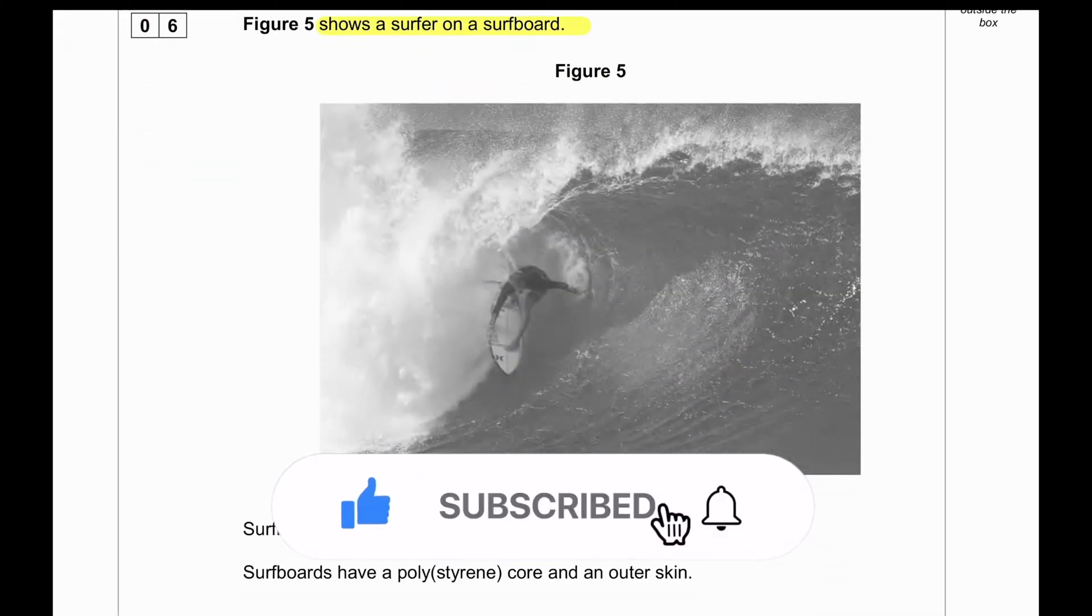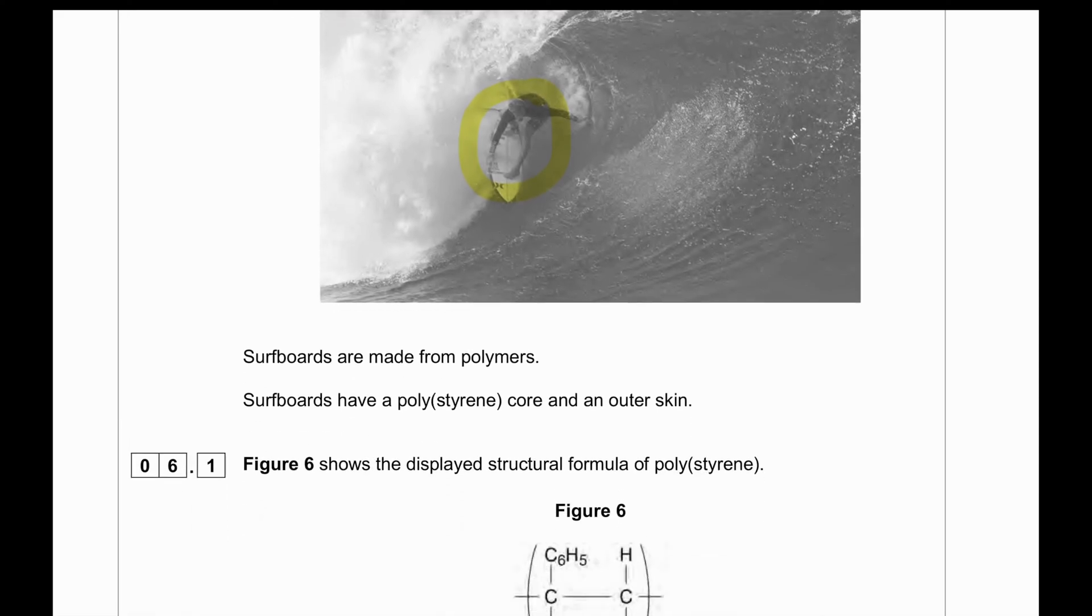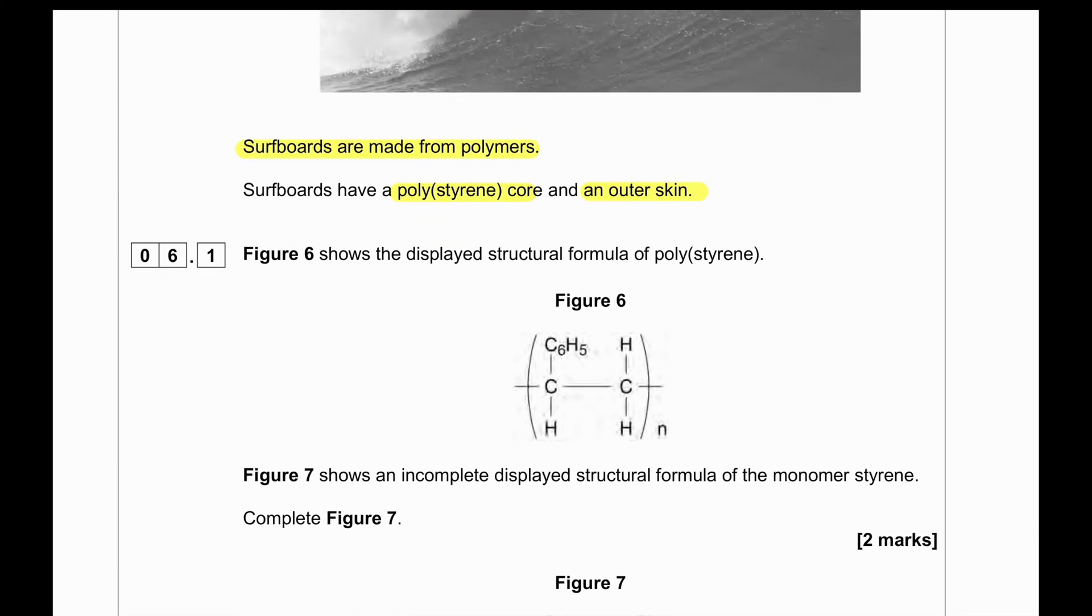Question number 6 shows a surfer on a surfboard. Surfboards are made from polymers, either a polystyrene core and an outer skin. Figure C shows the displayed formula for polystyrene - you can see C6H5 on one of the carbons and hydrogen, hydrogen, and hydrogen.